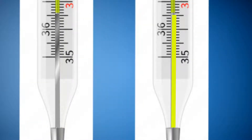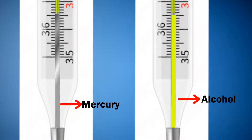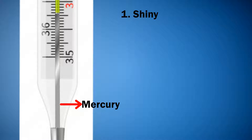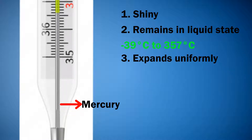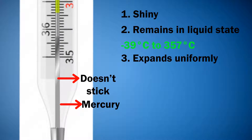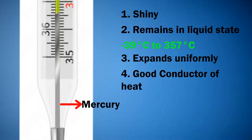Generally, mercury and alcohols are used in thermometers as they both fulfill the required properties. Mercury is shiny and remains in liquid state between minus 39 degrees centigrade to 357 degrees centigrade. It expands uniformly with temperature rise and does not stick to the walls of the thermometer. Since mercury is a metal, it is a good conductor of heat.